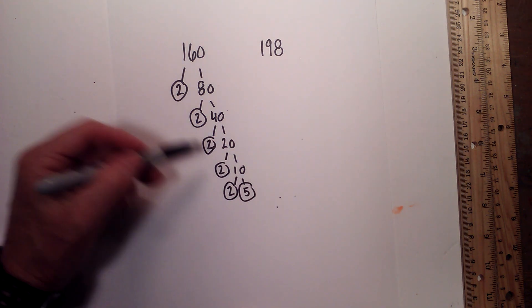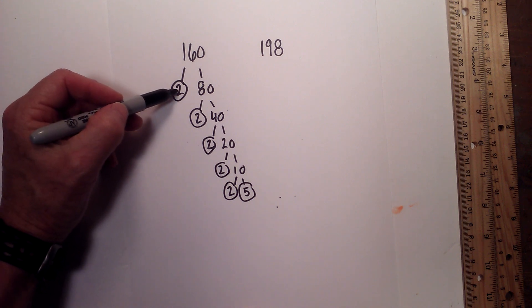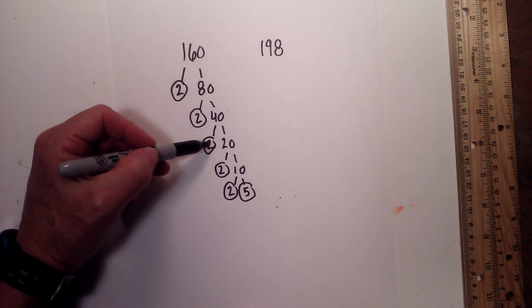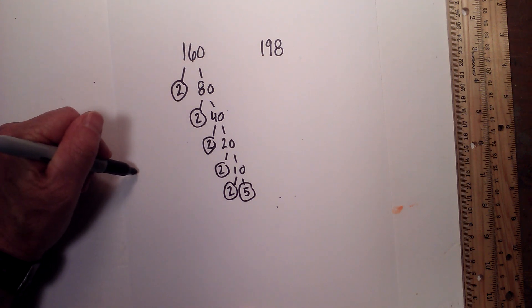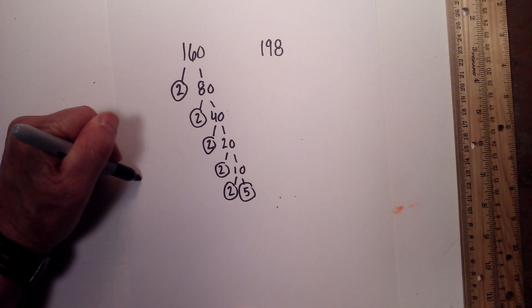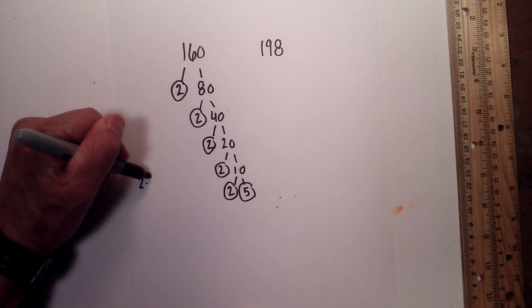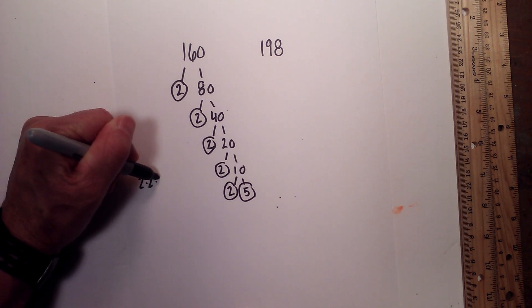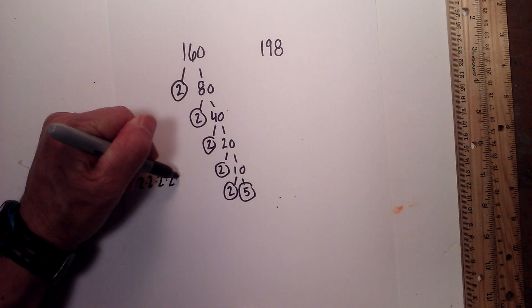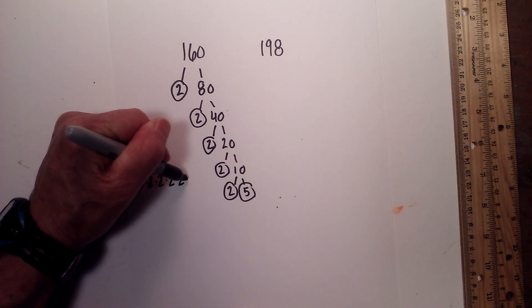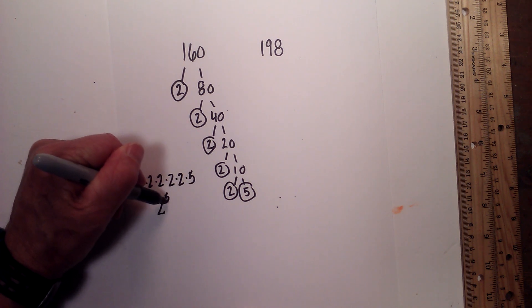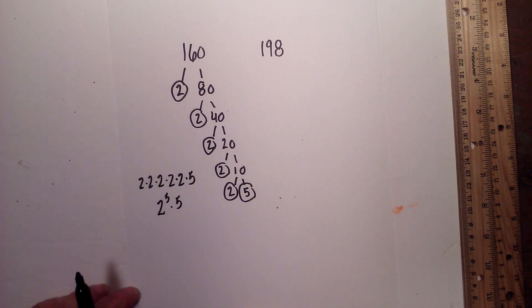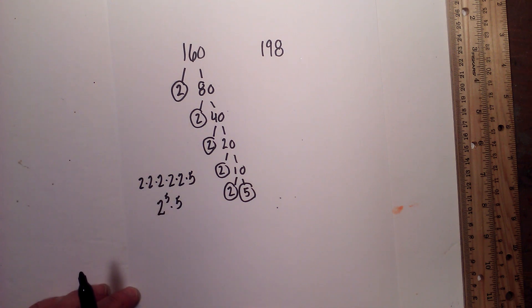I've got several twos — one, two, three, four, five. So the prime factorization of 160 is 2 times 2 times 2 times 2 times 2 times 5, or 2 to the 5th times 5. Now let's move over to 198.